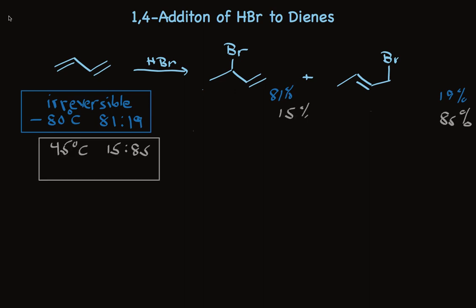At warmer temperatures, the 1,4 product is favored. Only 15% is the 1,2 product and 85% is the 1,4 product. The explanation is simple. At 45 degrees, the reaction is being run under reversible conditions.